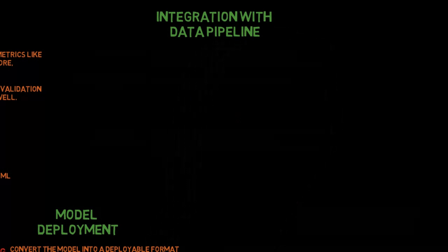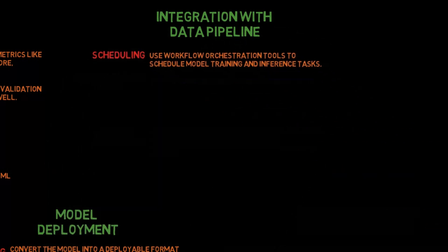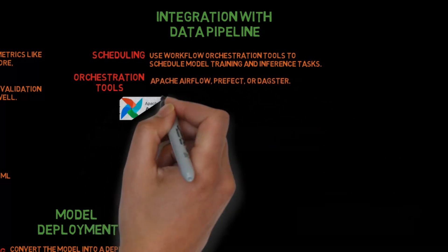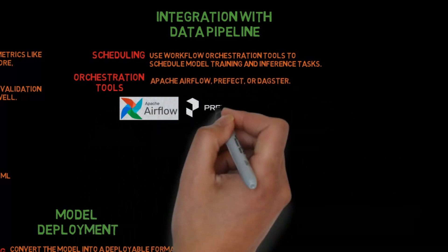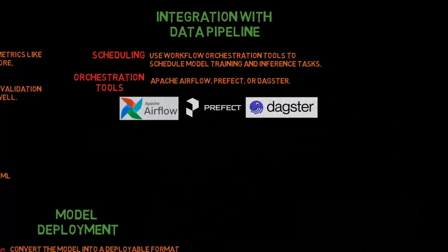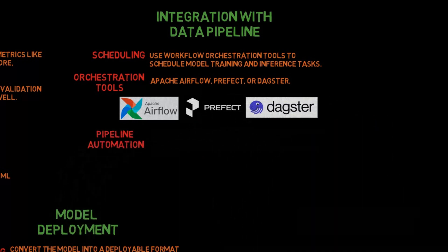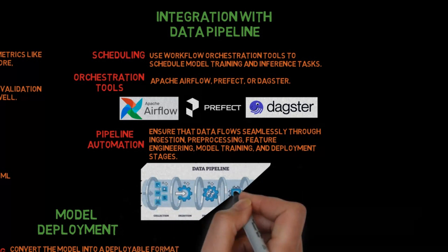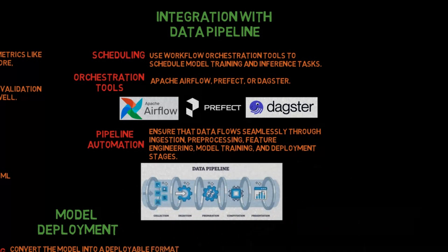Step 7: Integration with data pipeline. Scheduling: Use workflow orchestration tools to schedule model training and inference tasks. Orchestration tools include Apache Airflow, Prefect, or Dagster. Pipeline automation: Ensure that data flows seamlessly through ingestion, pre-processing, feature engineering, model training, and deployment stages.